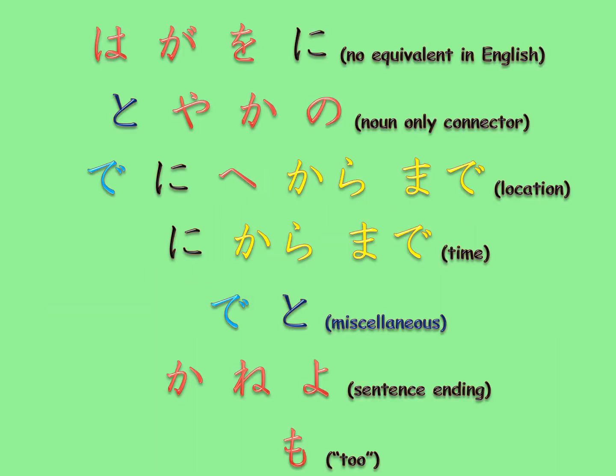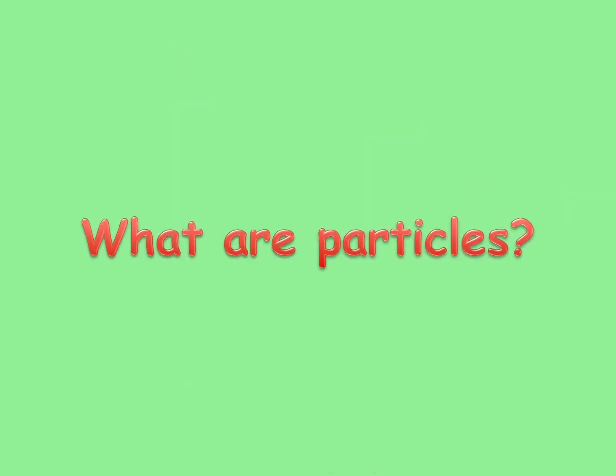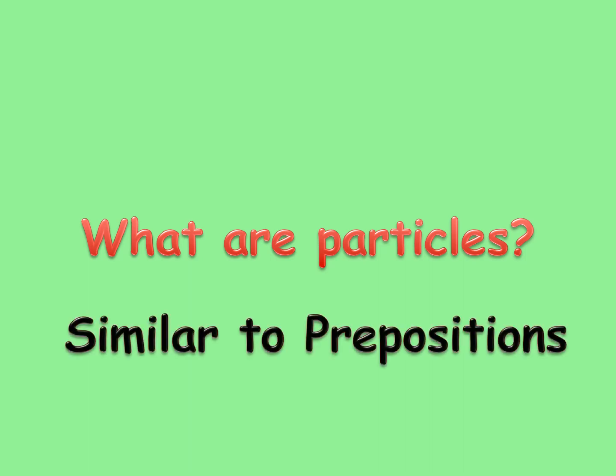I will divide them into seven groups and explain group by group. But before we start, we'd better revise what particles do. Particles are short words which connect a word or phrase to another part of the sentence. They are similar to prepositions in English.